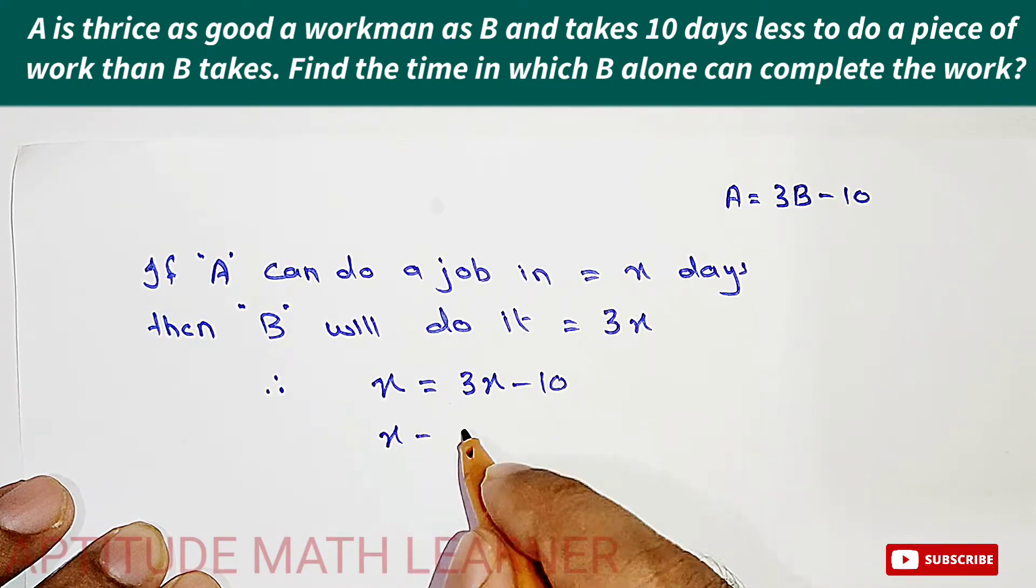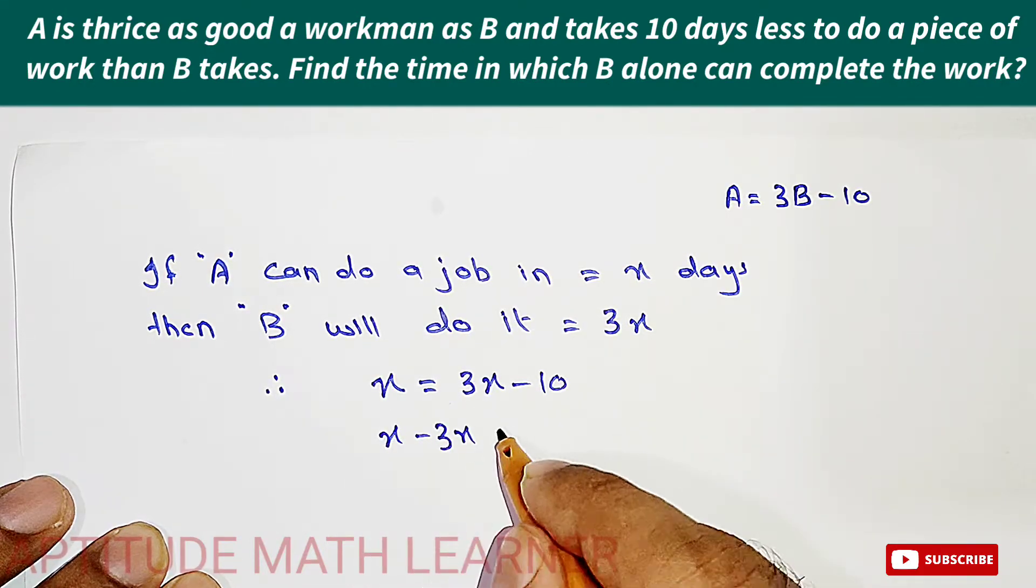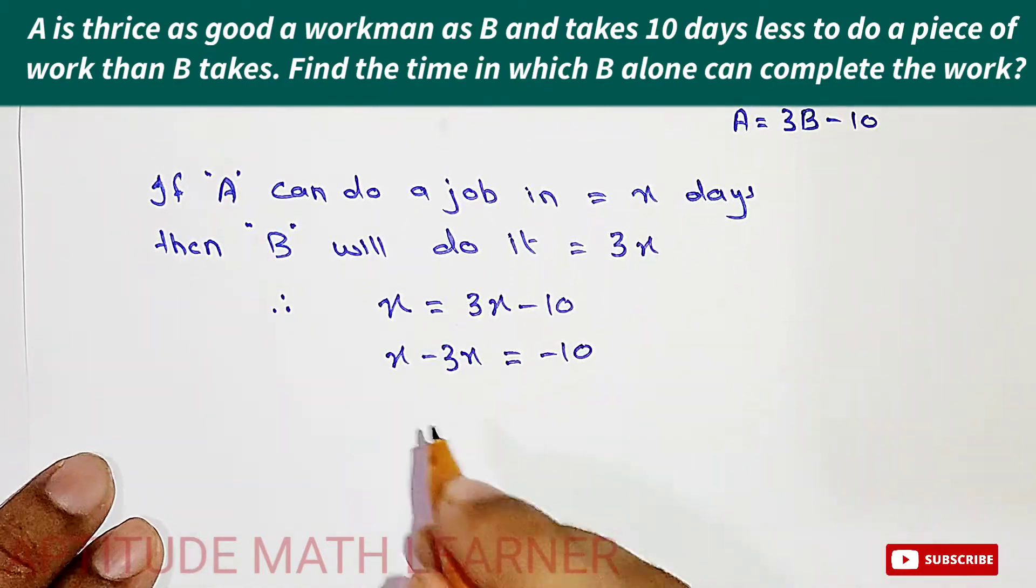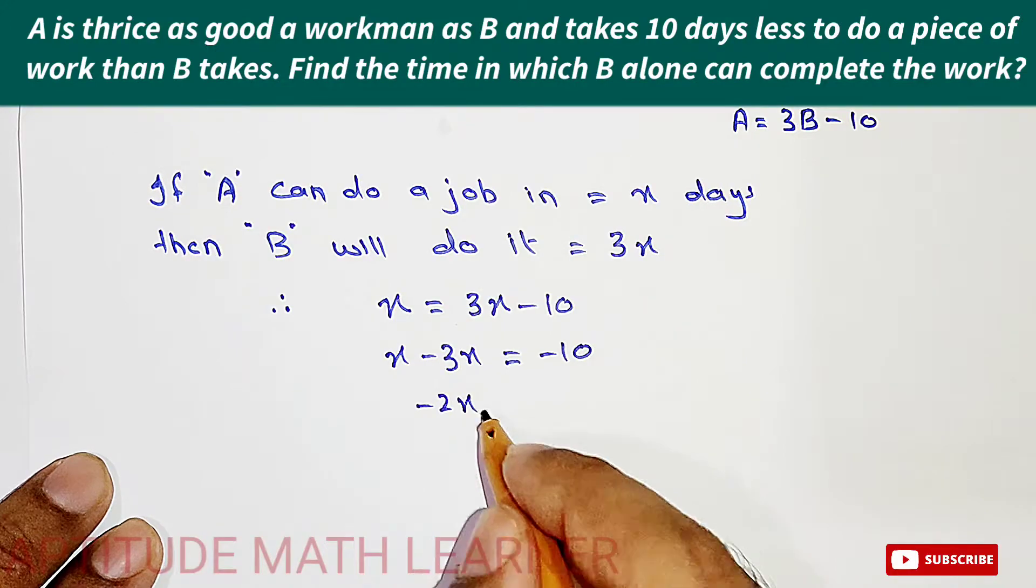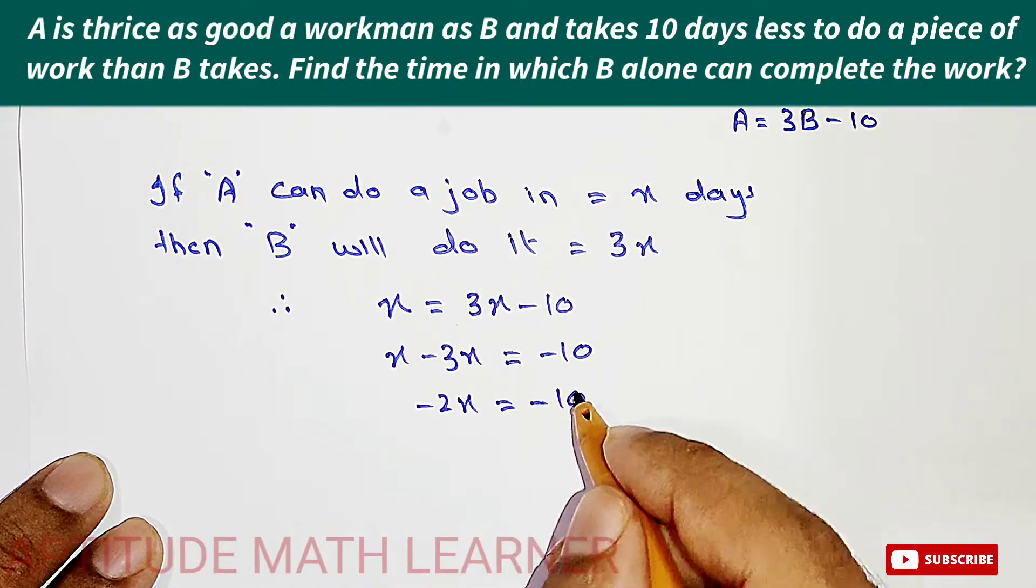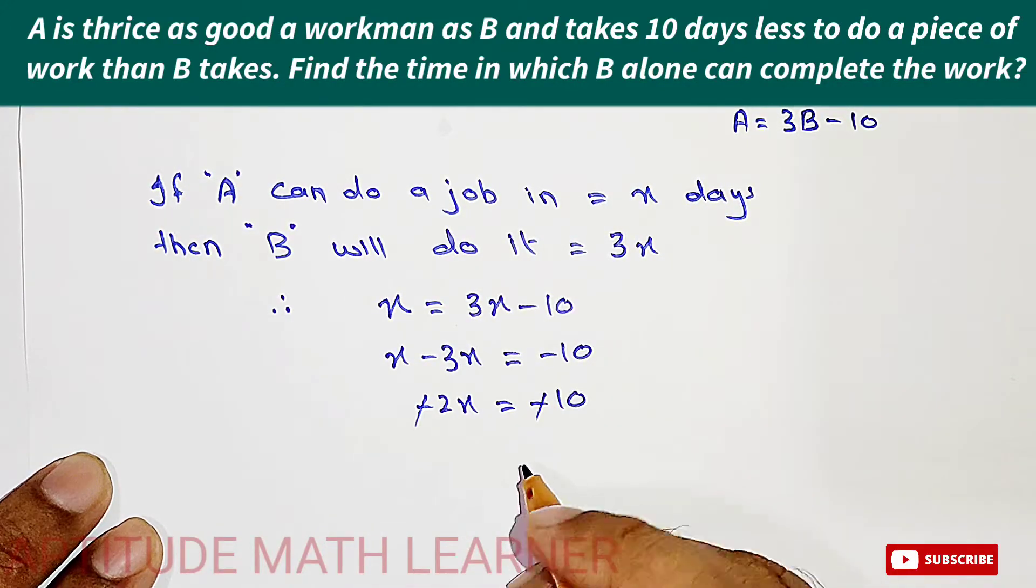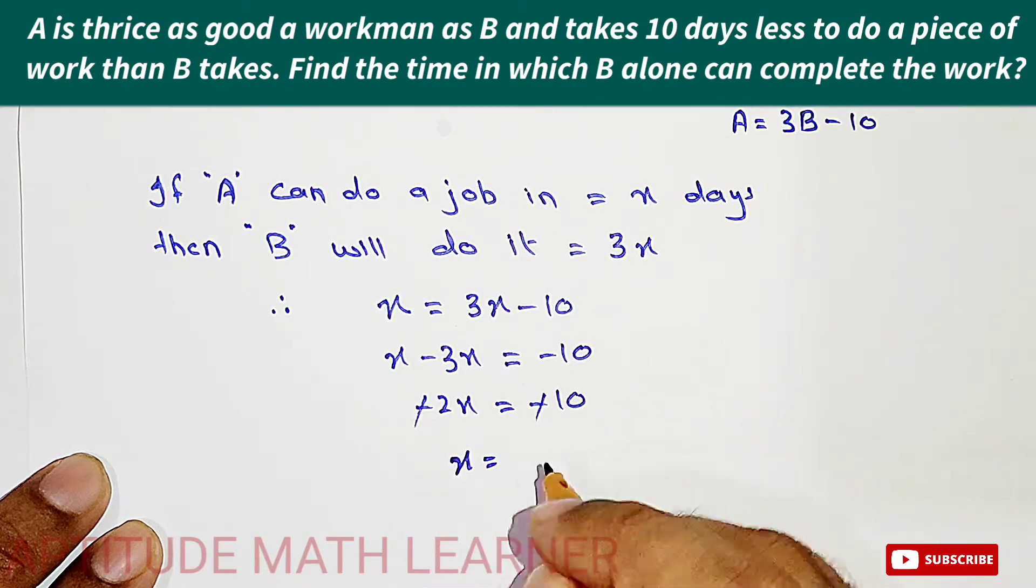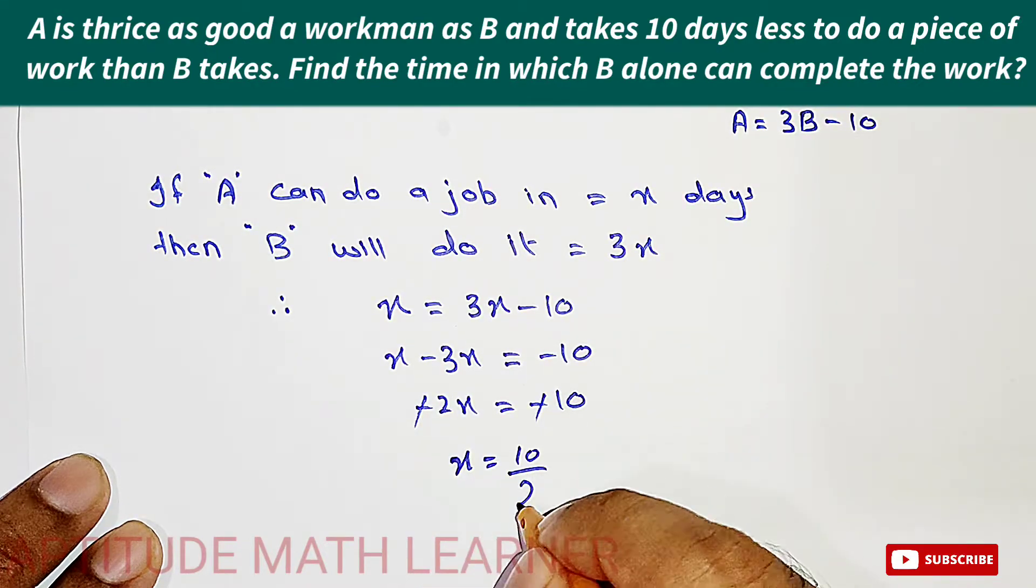Here x minus 3x is equal to minus 10, and this becomes minus 2x is equal to minus 10. So minus minus we cancel out with each other, and x is equal to 10 divided by 2.